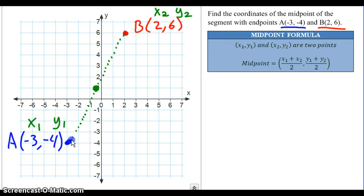So my midpoint given A and B, we're going to take negative 3, add it to 2, then divide by 2. And the y values, we have negative 4, adding that to 6, dividing by 2.